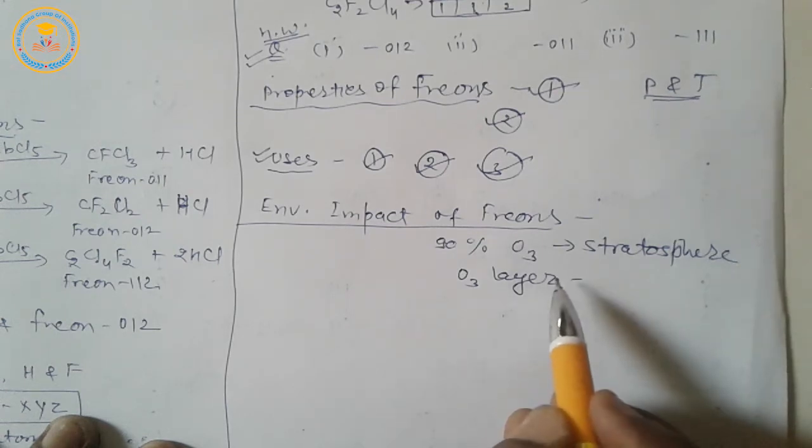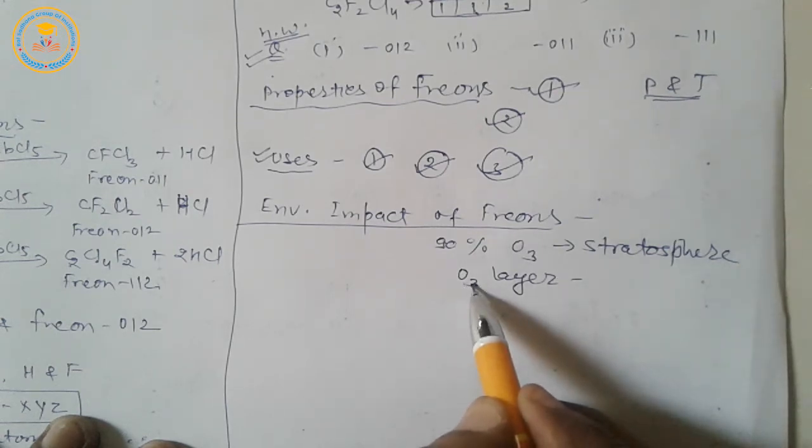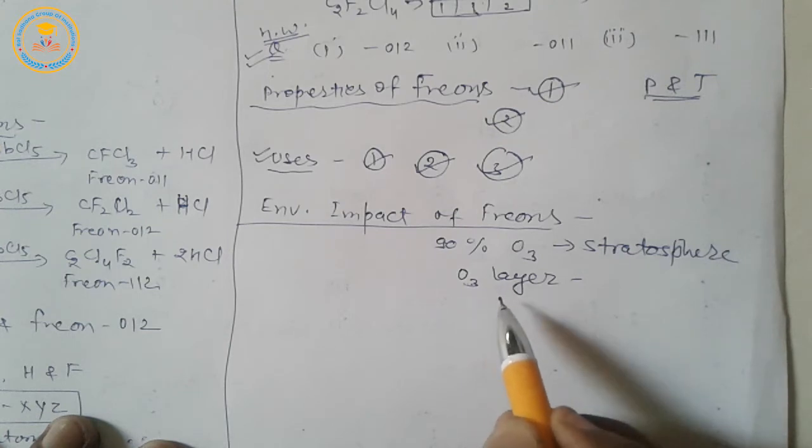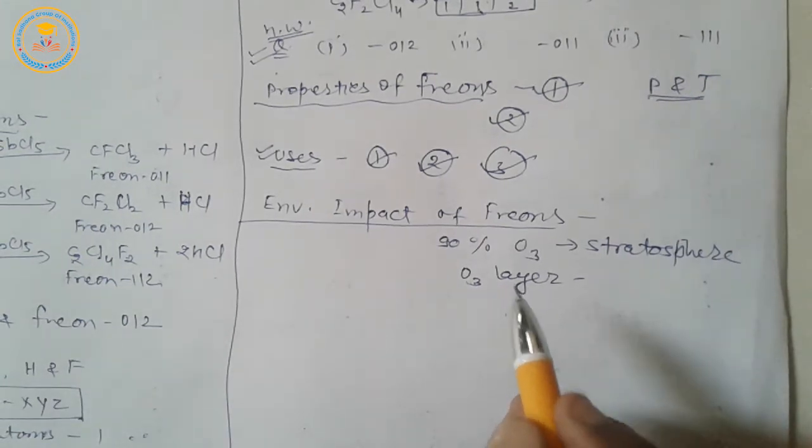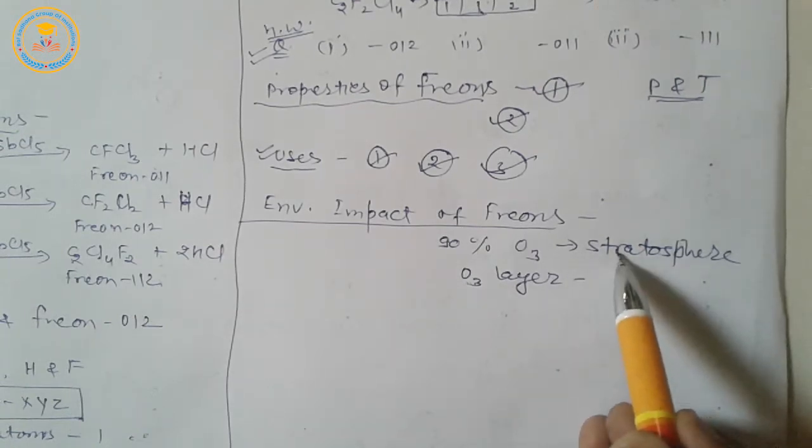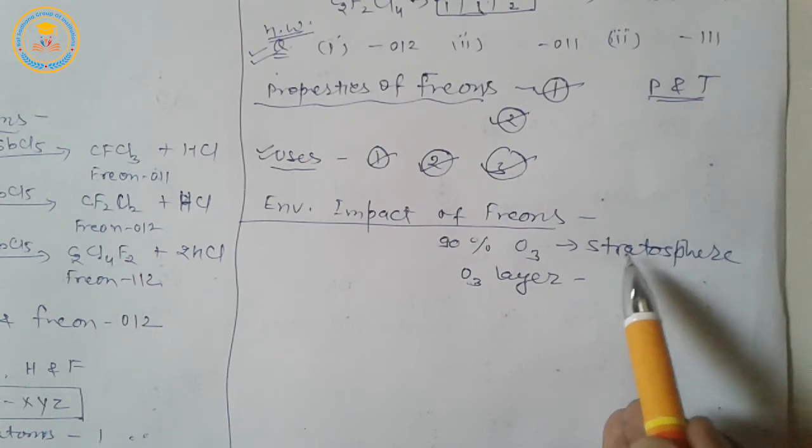If ozone gas is present on the surface of earth, then it is poisonous. In the stratosphere, ozone layer acts as life-saving gas for us.